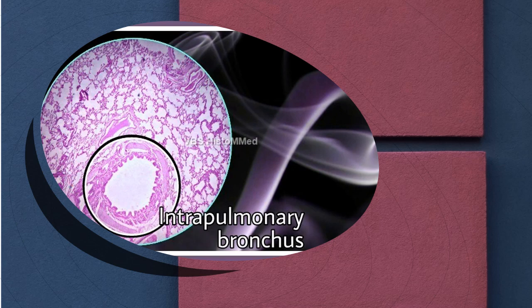We will now look at the first component of this discussion — the intrapulmonary bronchus. Then we will go into the smaller, histologically identifiable cross sections of the different parts of the bronchial tree down the line. We saw the intrapulmonary bronchi in the previous gross specimens. Here is a cross section of one of these.